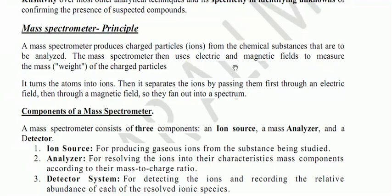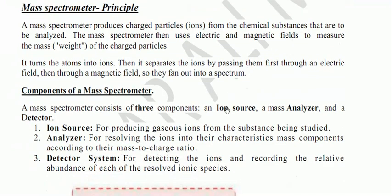The principle is that it first converts atoms into ions, then separates the ions by passing them through an electric field and then through a magnetic field, so they fan out into a spectrum.